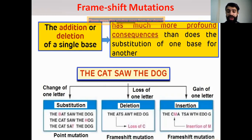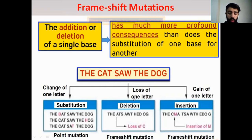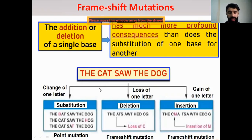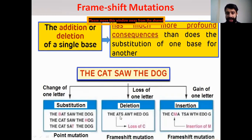But if we have the frameshift mutation — either by deletion or by insertion — by deletion we lose one letter. So one of these nucleotides is going to be lost. So here we remove the A. So A is going to be deleted, C is going to be deleted, so A, T and S — it becomes 'the adsaw the dr' plus C. So here there is no meaning at all.